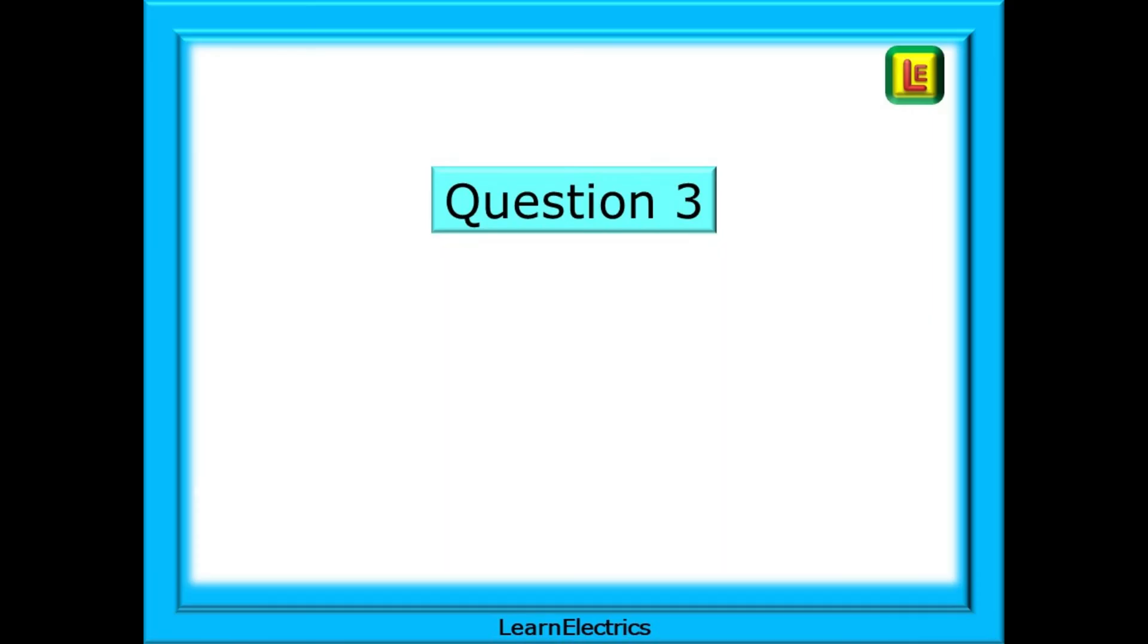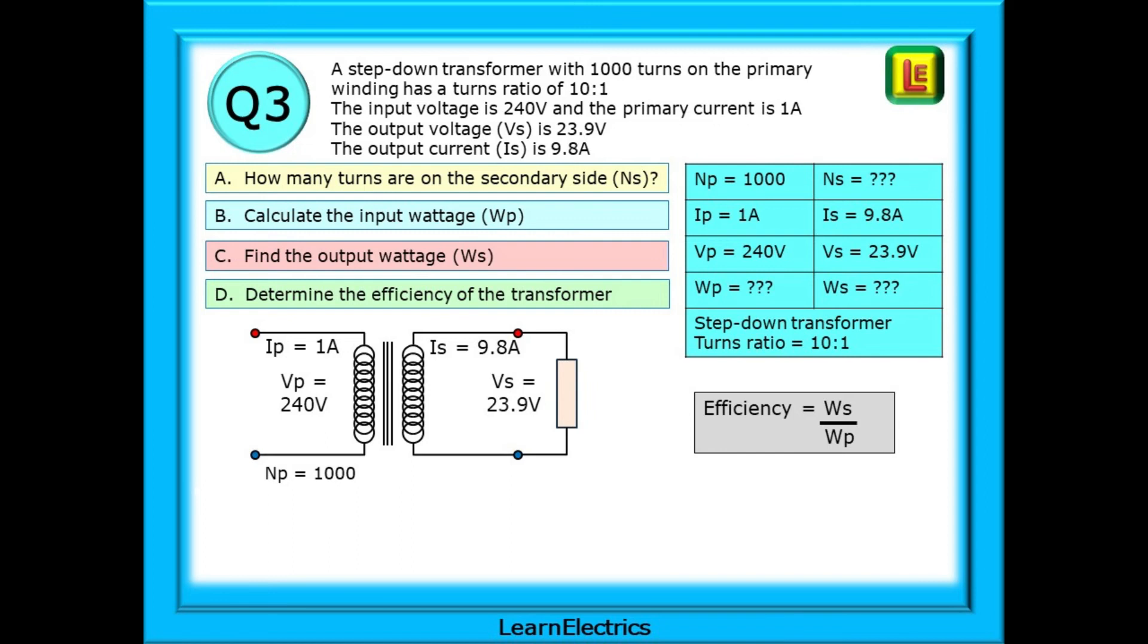And on to question number 3. There are four parts to this question and approached in order, you will have all the information that you need to answer the questions. Remember to pause the video and attempt the question yourself. A step-down transformer with 1,000 turns on the primary winding has a turns ratio of 10 to 1. The input voltage is 240 volts and the primary current is 1 amp.